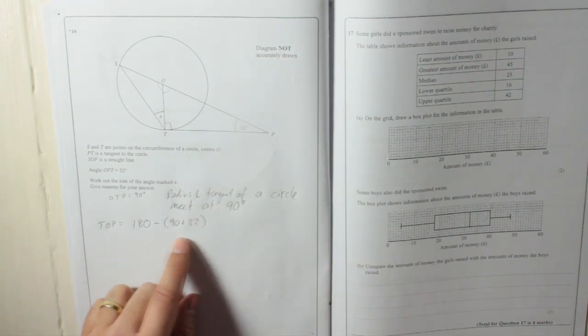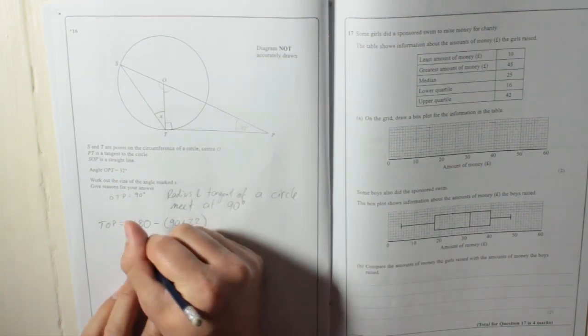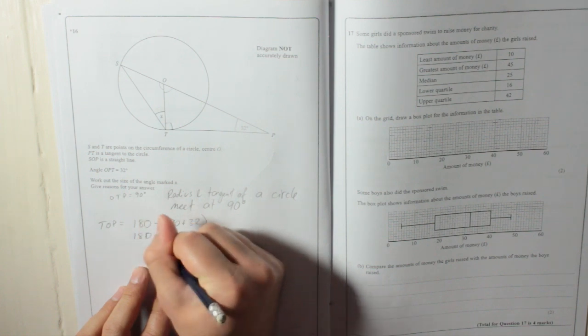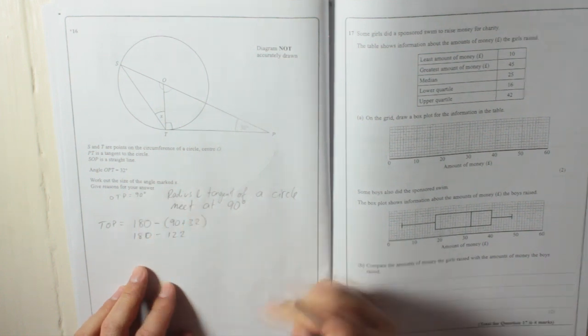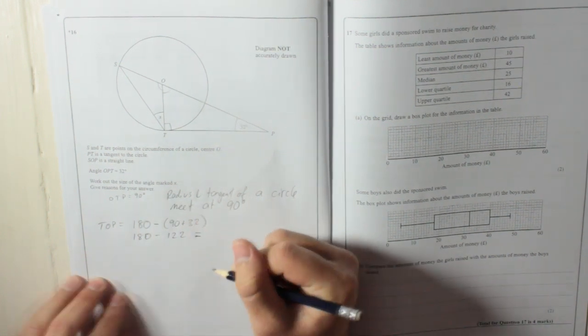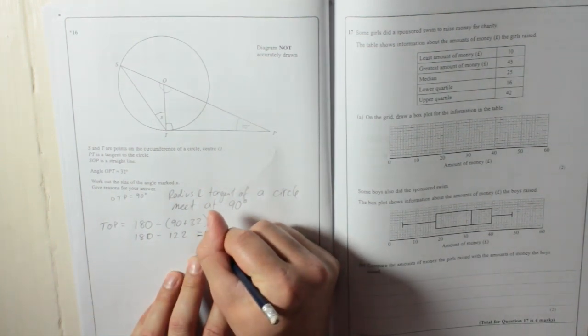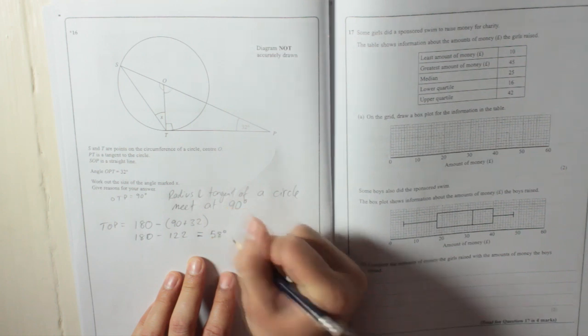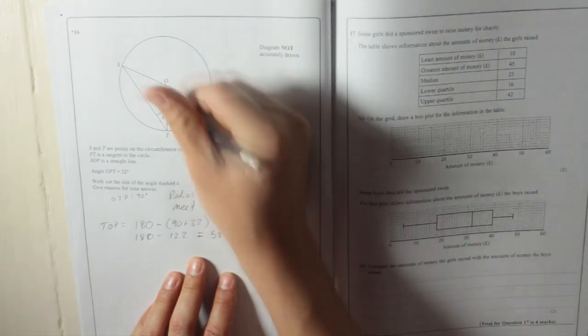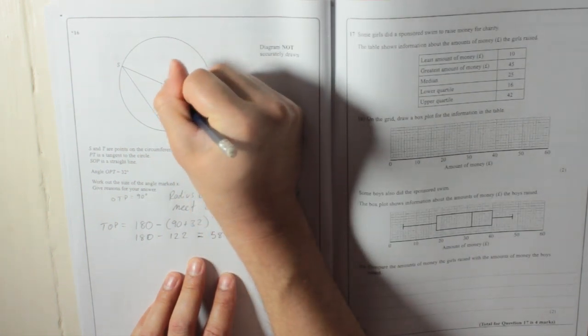90 plus 32 is 122. So 180 take away 122 is equal to 58 degrees. So I'll put that in there, T-O-P is 58 degrees.